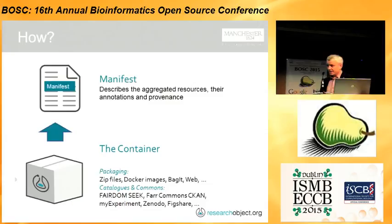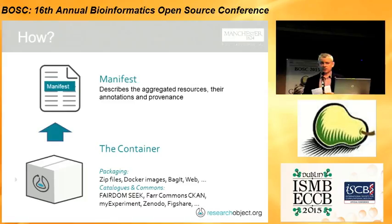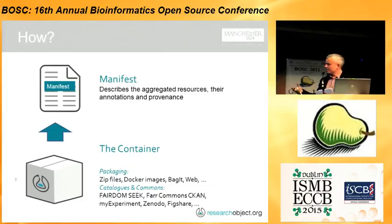So how do research objects work? It's basically a container. The container contains at its basic level a research object bundle — an organised container of zip files, or it can be Docker images. We're also working with another group using Bagit, which is popular with the library community, or it can just be links to things on the web. There are also catalogs and commons platforms supporting research objects. What we like to do with the container is have a manifest of the things inside it, whether real or imagined.